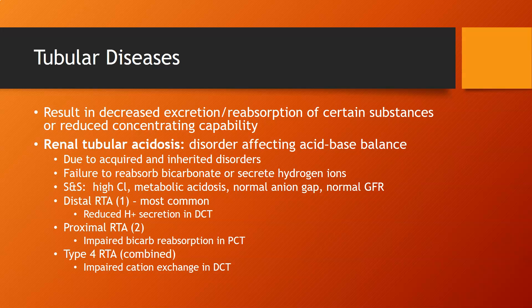Tubular diseases are the second stage in making urine, and they usually result in decreased excretion or reabsorption of certain substances, or a reduced concentrating capability. Renal tubular acidosis involves disorders that affect acid-base balance — either acquired or inherited. There is a failure to reabsorb bicarbonate or to secrete hydrogen ions. Signs and symptoms include high chloride metabolic acidosis with a normal anion gap and normal glomerular filtration rate. Distal renal tubular acidosis is the most common type.